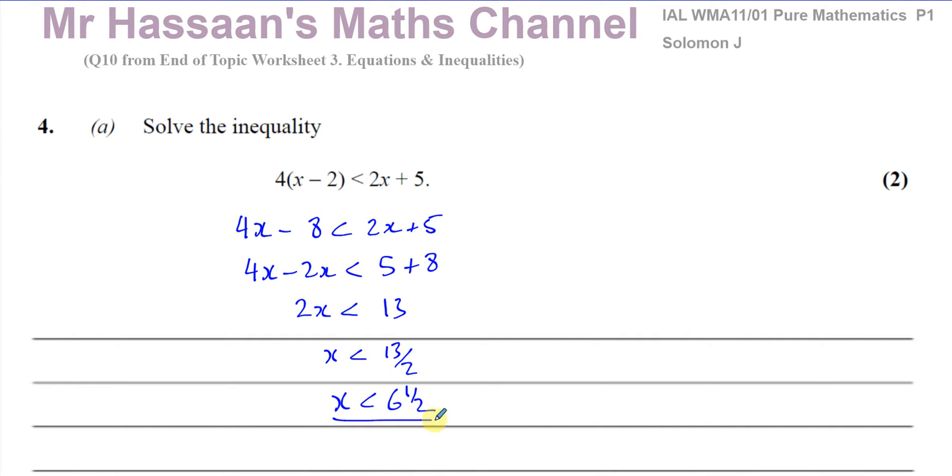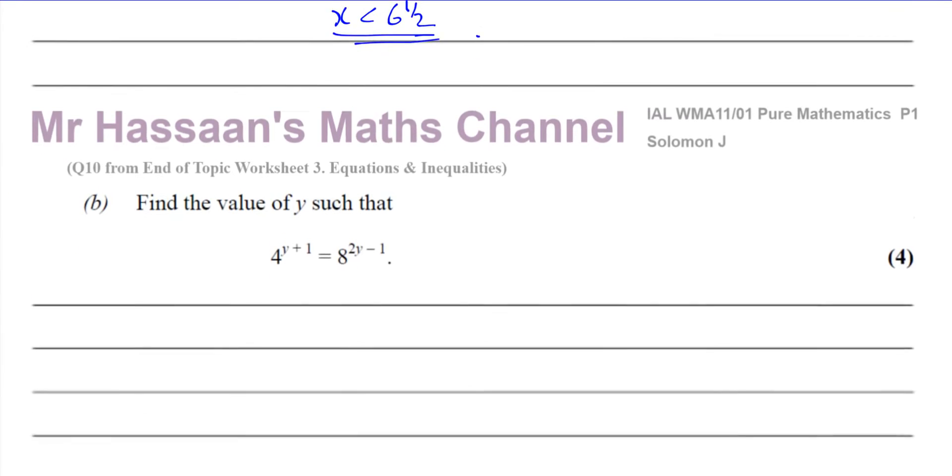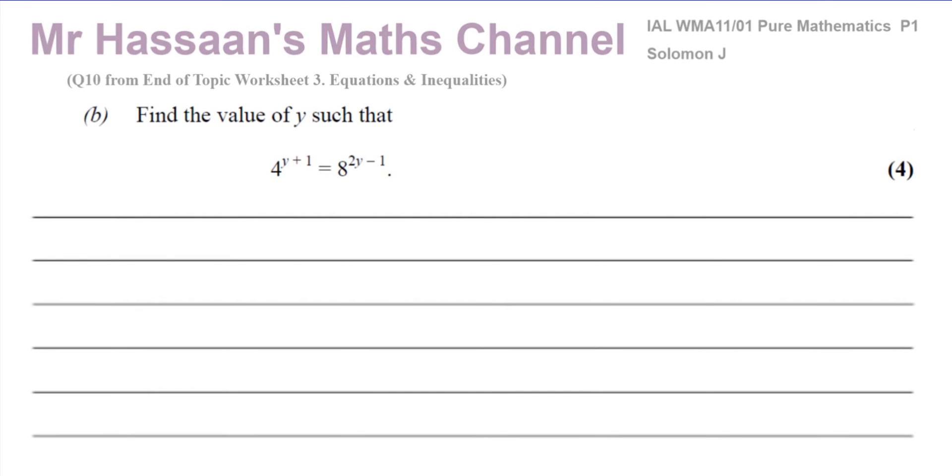And there we have the answer to part a, very simple question. Part b was what I was asked about and part b is also quite a simple question. It actually belongs in chapter 1 which is about indices and surds.